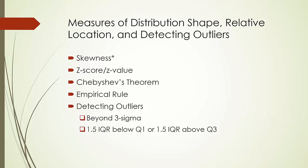For any z value greater than 1, Chebyshev's theorem has shown that at least 1 minus 1 over z-squared of the data values must be within z standard deviations of the mean. This is true for any distribution. More specifically, at least 75% of the data values must be within 2 standard deviations of the mean, at least 89% within 3 standard deviations, and at least 94% within 4 standard deviations. If we are working with bell-shaped normal distributions, also known as Gaussian distributions, we have something more accurate called the empirical rule.